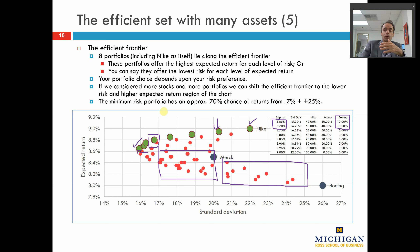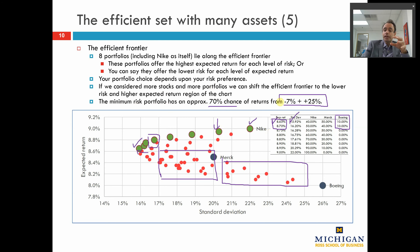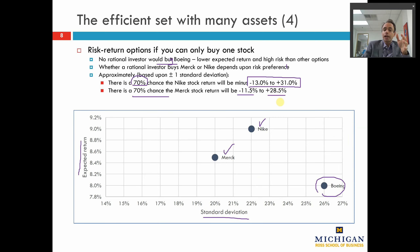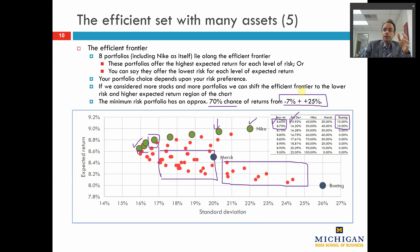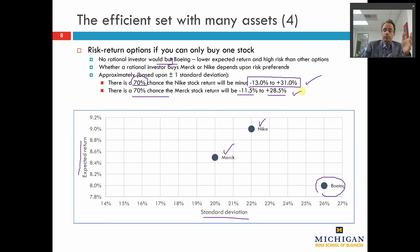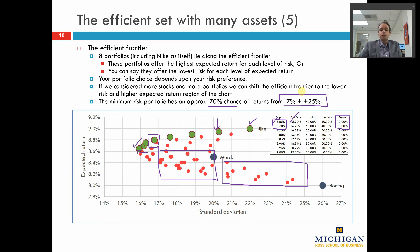So the person in retirement, if these are all the investments that person could possibly make, is going to hold that low risk portfolio. The minimum risk portfolio offering an expected return of 8.65% and standard deviation of 15.9% has approximately a 70% chance of returns from minus 7% to plus 25% — that's one standard deviation either side of the average. That is a narrower range than Nike on its own or Merck on its own because of the diversification benefit. Instead of facing the possibility of losing 13% of your wealth with a one standard deviation shift, you're now only facing the possibility of losing 7% of your wealth.